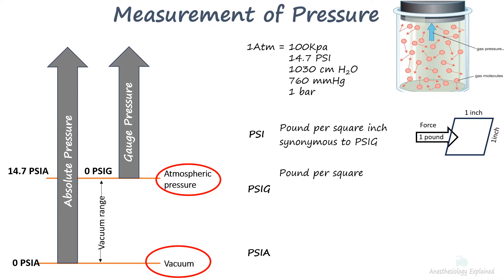PSIG is pound per square inch gauge. Gauge pressure is measured relative to ambient atmospheric pressure and starts with zero at atmospheric pressure. Cylinder pressures are measured with PSIG.